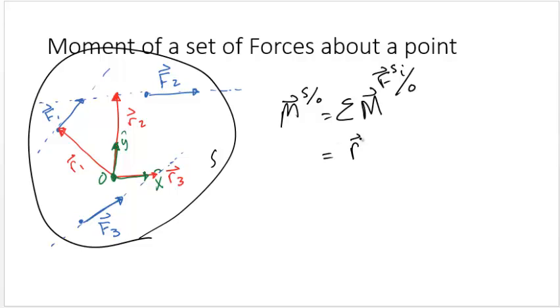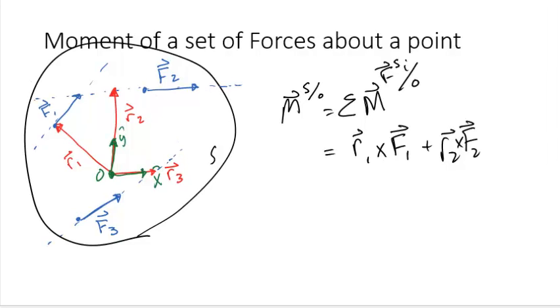In this case, we have R1 crossed with F1, which will give you the moment due to force 1 about point O. Notice I have R2 crossed with F2, where R2 is pointing to the line of action of F2 and it's not actually in contact with the force vector. Recall that the position vector or moment arm does not have to actually touch the force itself. It simply has to connect with the line of action of the force.